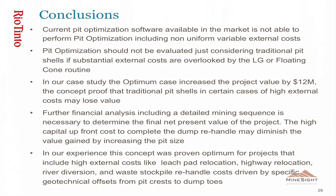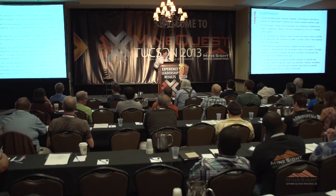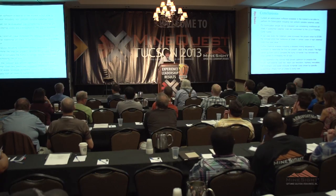The value increase protected here is $12 million between the aggressive solution and the optimal — not enormous in this case study. But we have many projects at Rio Tinto where the range of value protected by doing these exercises is in the hundreds of millions of dollars. This concept can be applied to many cases: facilities and structures located around the pit rim, including leach pad relocations, highway relocations, river diversions, or waste stockpile re-handle driven by a specific geotechnical offset. Thank you.